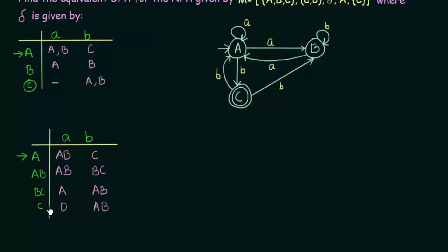Now I must also define what happens to dead state D to make the DFA complete. In a dead state, whenever any input comes, it stays trapped in the dead state. So whether D gets input A or B, it stays in dead state D itself.